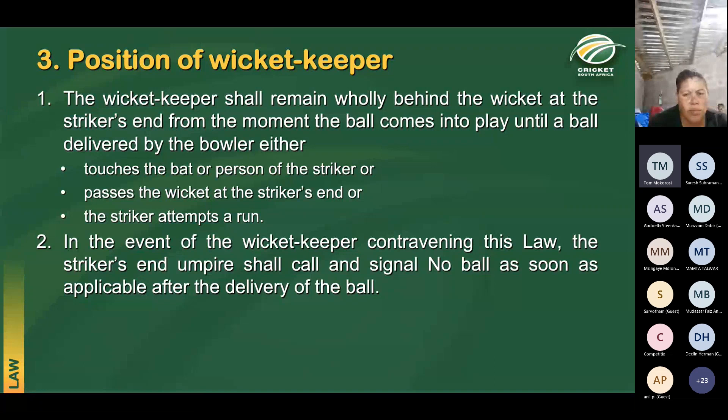What happens if the wicket keeper moves in front of the stumps before either of those three incidents occur? He or she shall be contravening the law and the striker's end umpire shall call and signal no ball as soon as applicable after the delivery has been bowled — remembering that you can only call no ball if a ball has been delivered.